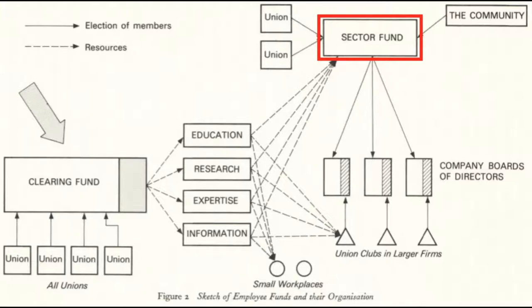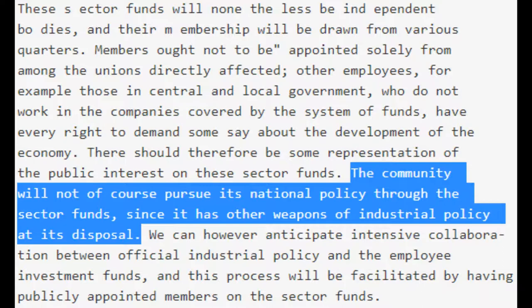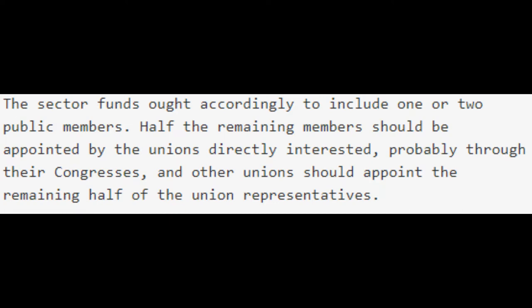Next, we look at how the board members of these intermediate sector funds would be selected. Just as with the clearing fund, the board members would be selected by unions. But unlike the clearing fund, there is another group — labeled in the diagram as the community — which would also be electing board members. This is where the Meidner Plan involves a recognition that workers in workplaces which do not send up shares into the fund system — because, say, they work in a business with fewer than 50 employees or they work for the government — should also have a say. It was not assumed that political policy should be pursued directly through these funds, but that this connection would help coordinate between the funds and the policies of governments.